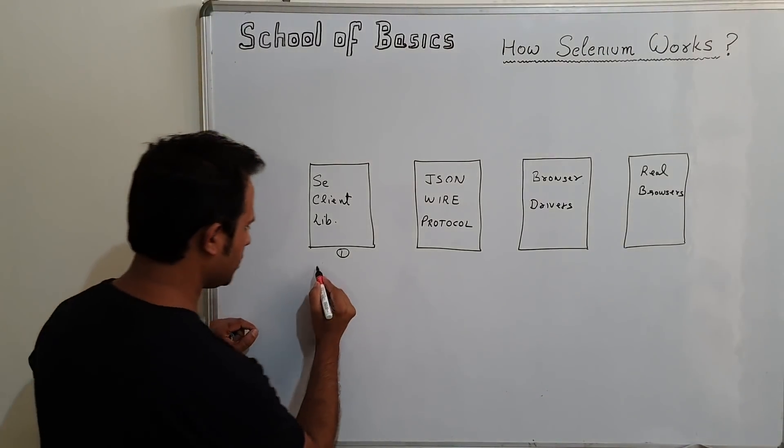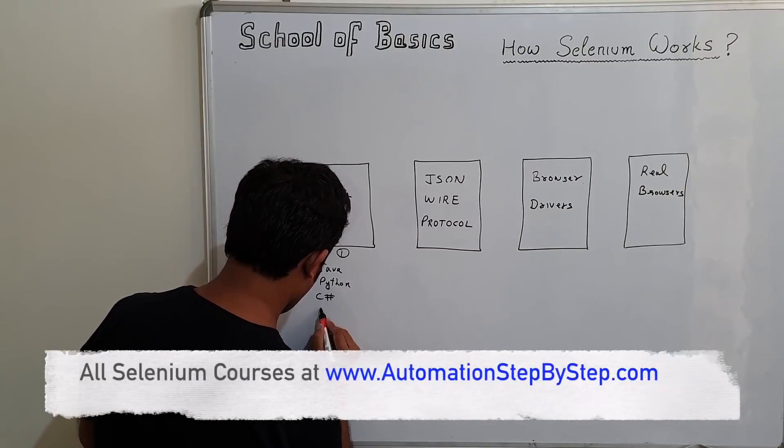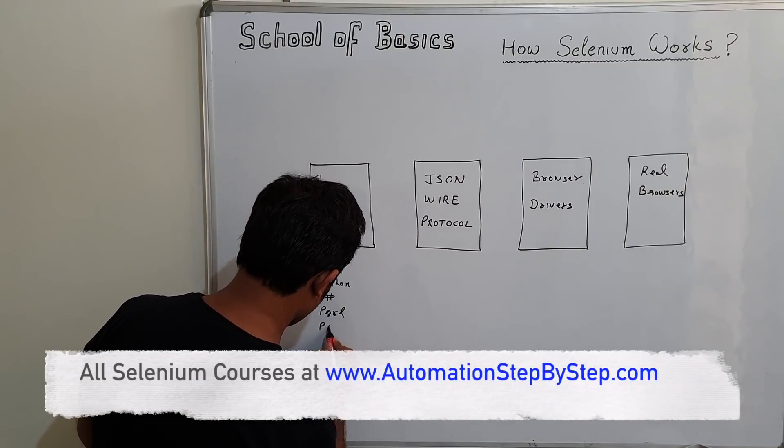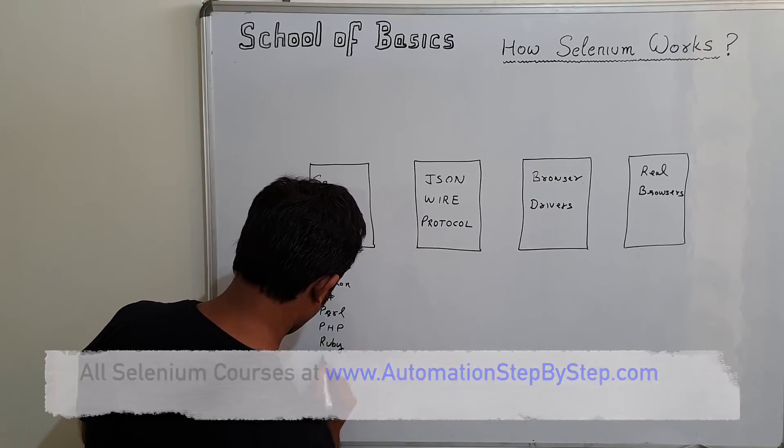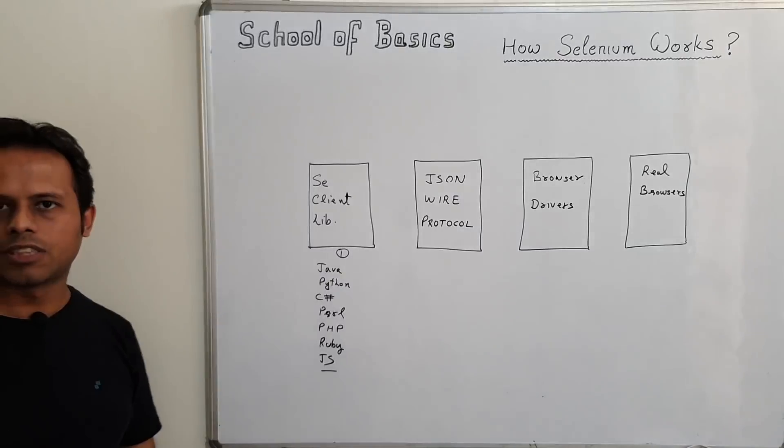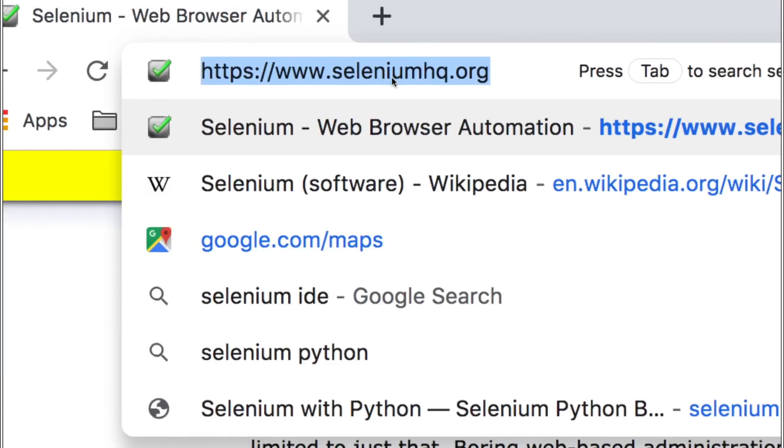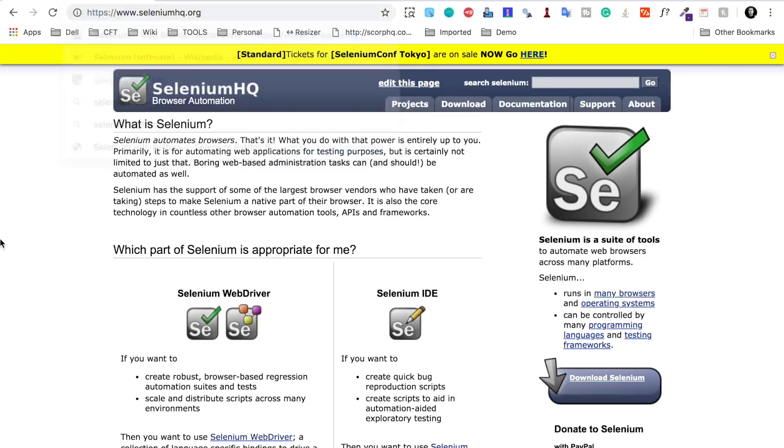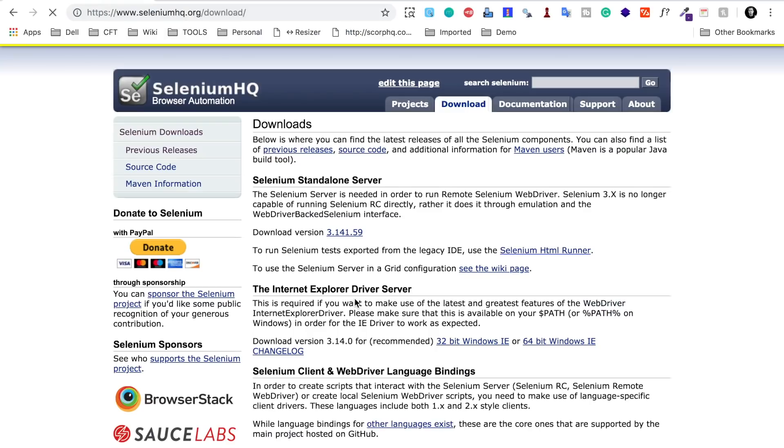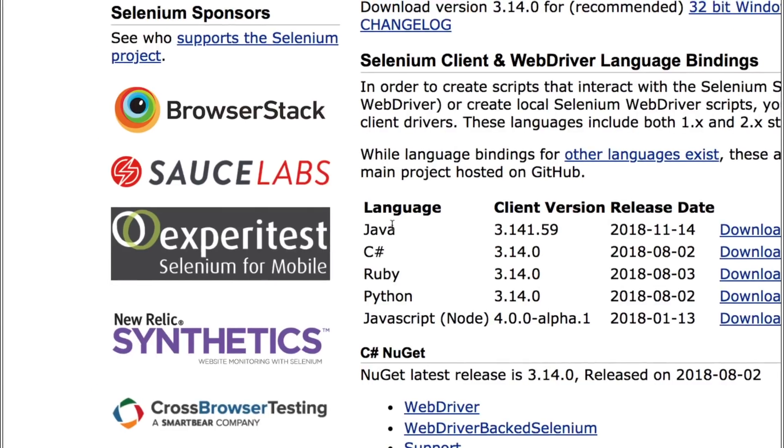We have Java, Python, C#, Perl, PHP, Ruby, JavaScript and so on. If you go to the Selenium official page which is seleniumhq.org and go to the download section, you will find all these client libraries so you can download them and use them in your project.